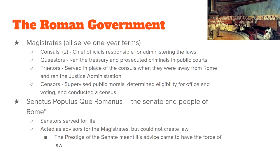The quaestors were in charge of money and prosecuted criminals. The praetors were kind of like vice consuls — if the consul was away, the praetors took over — and were also in charge of justice administration and the courts. Finally, the censors policed morals, decided how many Romans there were by running the census, and determined who could and could not run for office.